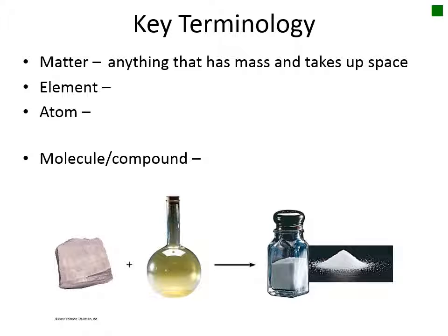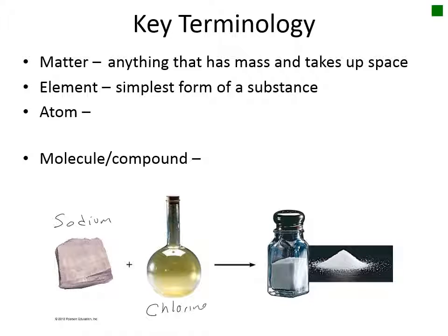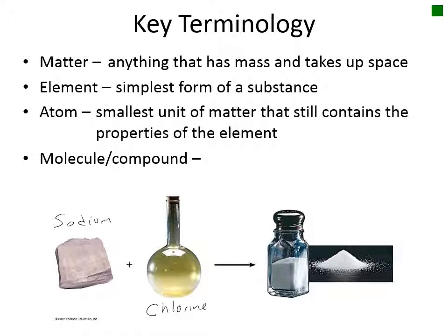Matter is made up of substances called elements. Elements are the simplest form of substances; they have specific chemical and physical properties unique to one specific element and cannot be broken down by ordinary means. Two elements are pictured here: the first is sodium, a soft silvery metal, and the second is chlorine, a yellow-green gas. This chunk of sodium would be composed only of sodium atoms. An atom is the smallest unit of matter that still contains the properties of the element. It is important to study atoms because it is the interaction of atoms with other atoms that allows all chemistry of life to occur.